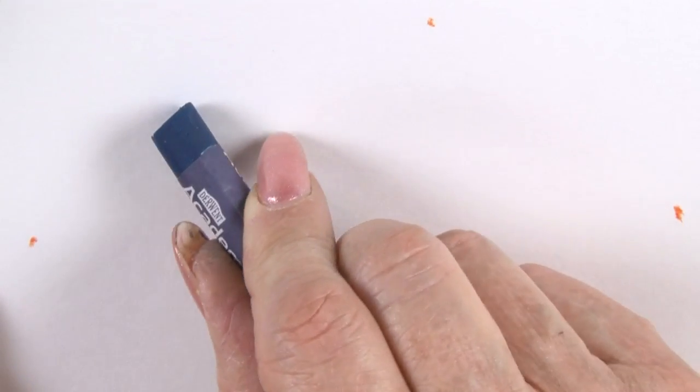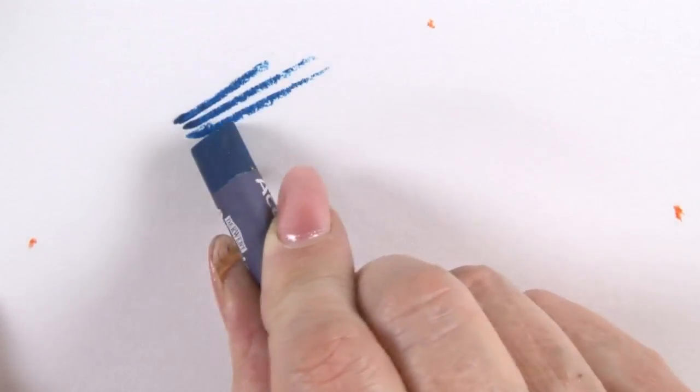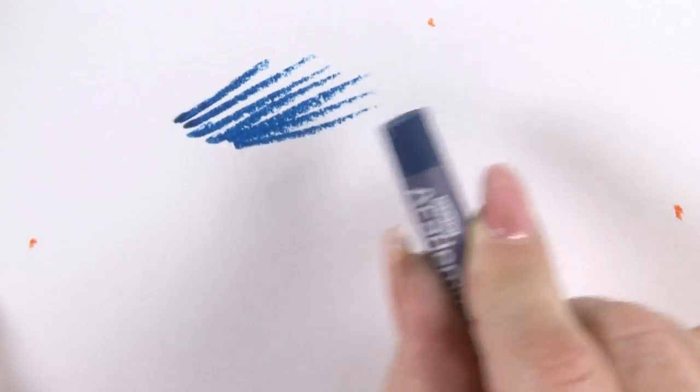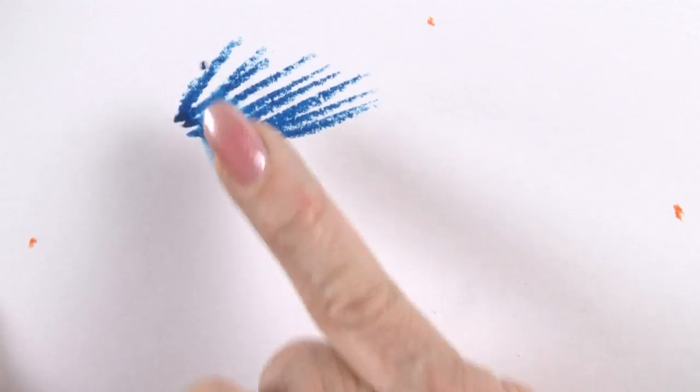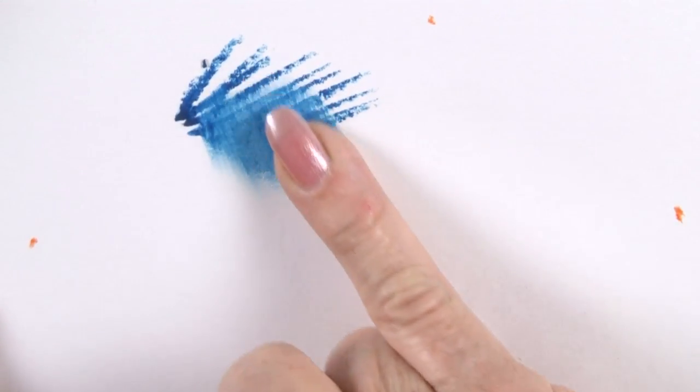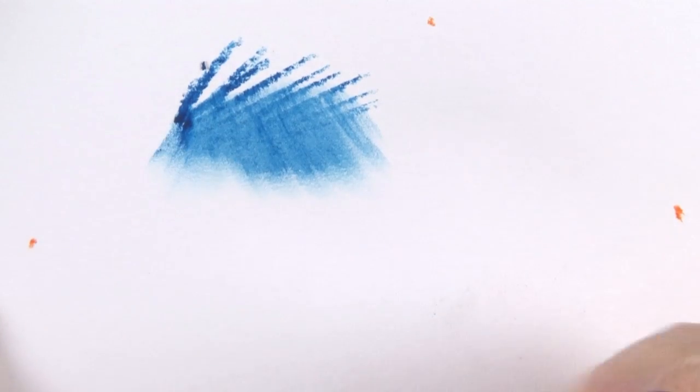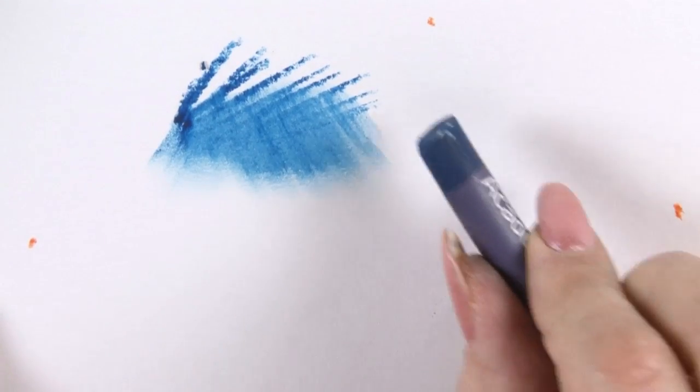This is the Academy Oil Pastel range and it's lovely to work with. You can draw with it as if you're drawing with a pencil or with dry pastels. If you use your hand, the heat from your hand will actually smudge the color, or you can use solvent to smudge with.